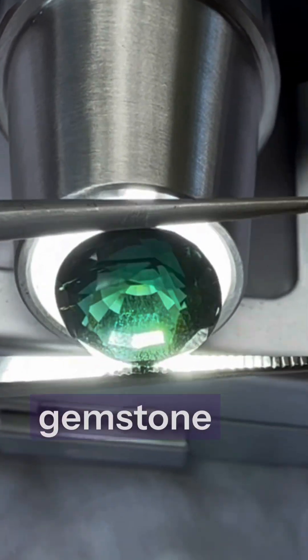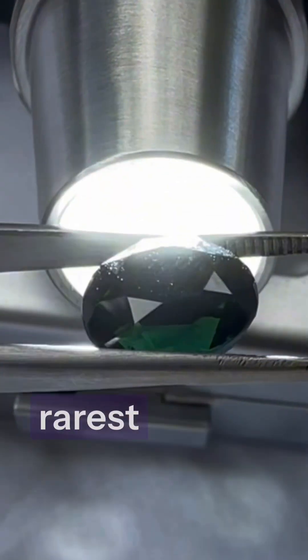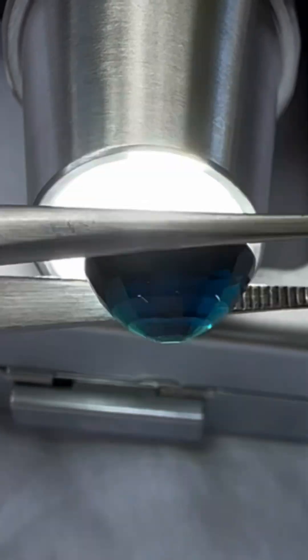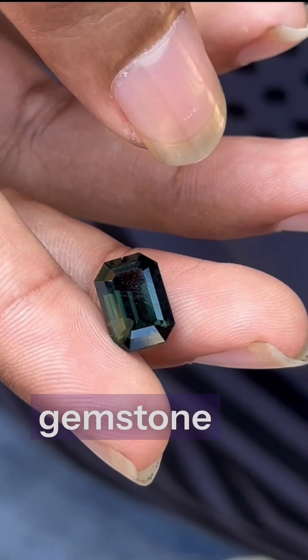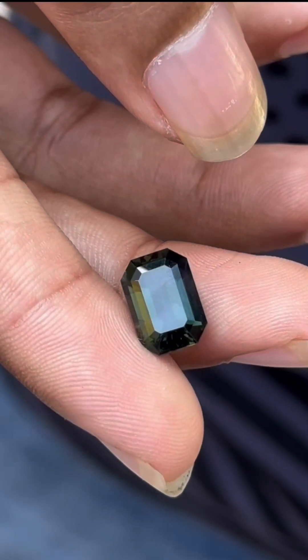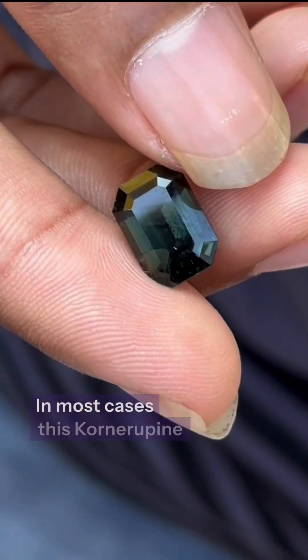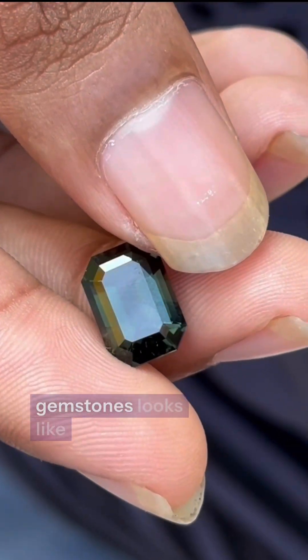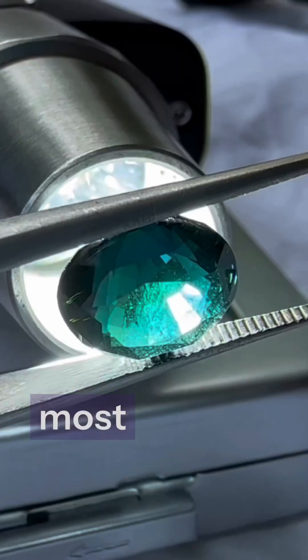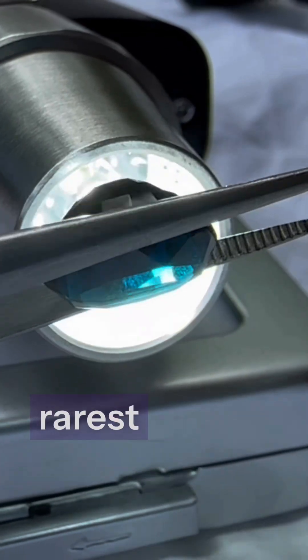This is a serendibite gemstone, one of the world's most rarest and most expensive gemstones. And this is kornerupine gemstone, which is also considered a rare gemstone. In most cases, this kornerupine gemstone looks like the world's most rarest, extremely rare serendibite.